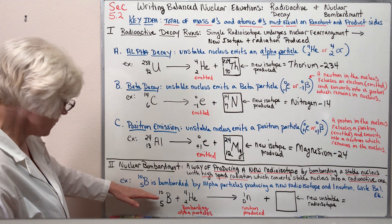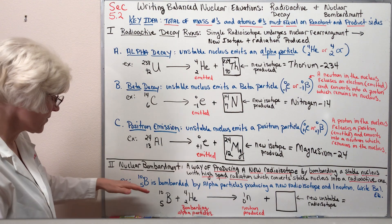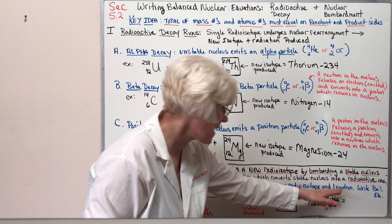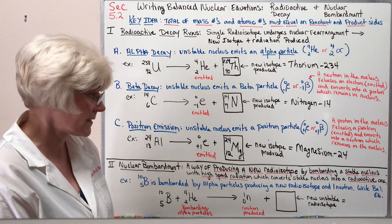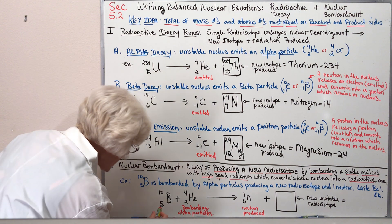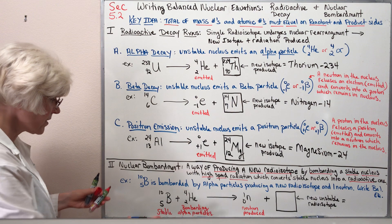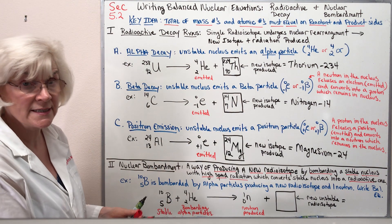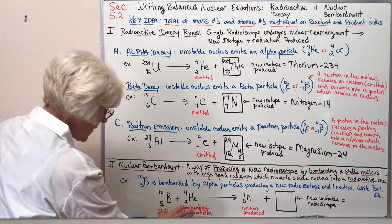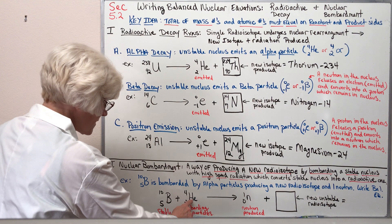As an example, we can take boron-10, which is a stable nucleus, and bombard it with alpha particles. Bombarding boron-10 with alpha particles produces a new unstable radioisotope as well as a single neutron as a product. So we have as reactants boron-10 plus alpha particles. Notice nuclear bombardment has two reactants — unlike radioactive decay which only has a single reactant. Bombardment has two reactants: a stable nucleus and a bombarding radiation particle, in this instance alpha particles.